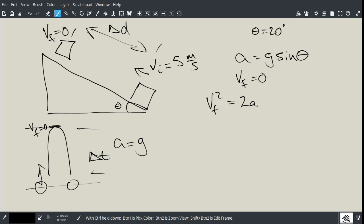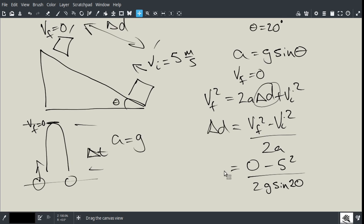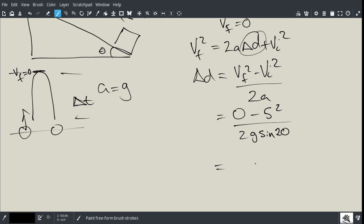v final squared is equal to 2a delta D plus vi squared, then we can calculate delta D, where delta D equals v final squared minus v initial squared all over 2a. In this case, we know v final is 0 minus 5 squared all over 2 times, and acceleration we know is g sine 20. And so now we can plug that into our calculator, and we'll get an answer of 3.73 meters.